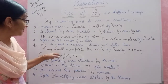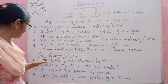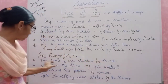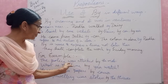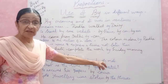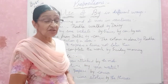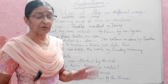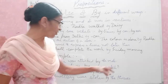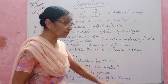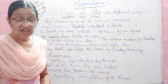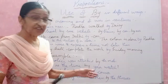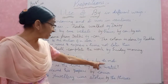These are the meanings where we use 'by.' Some examples are given here. First: 'The police was attacked by the mob.' Who attacked the police? The mob. A mob means a crowd of people who came to protest. When a large number of people are protesting, that is called a mob. So the police was attacked by the mob — by whom? By the mob.